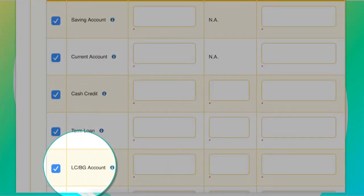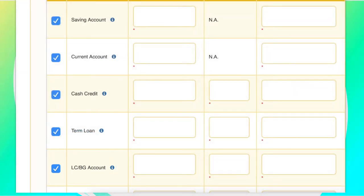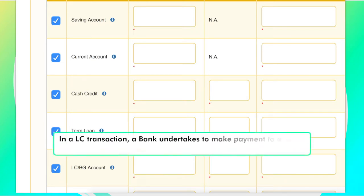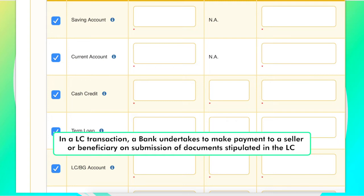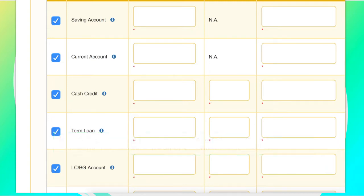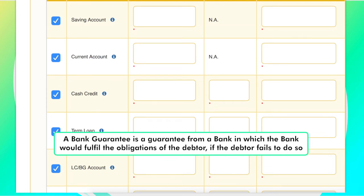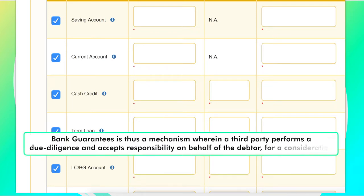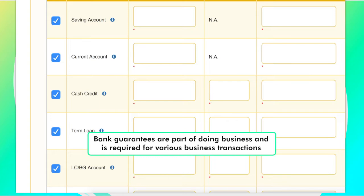Letter of Credit or Bank Guarantee: a letter of credit is an assured form of payment widely used by businesses in trade transactions. In an LC transaction, a bank undertakes to make payment to a seller or beneficiary on submission of documents stipulated in the LC. A bank guarantee is a guarantee from a bank in which the bank would fulfill the obligations of the debtor if the debtor fails to do so. Bank guarantees are part of doing business and are required for various business transactions.